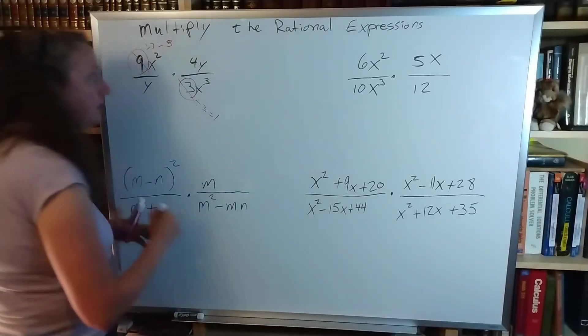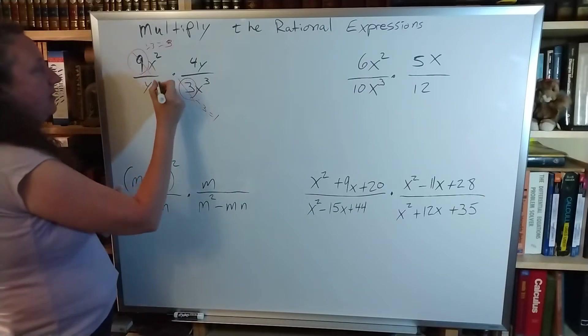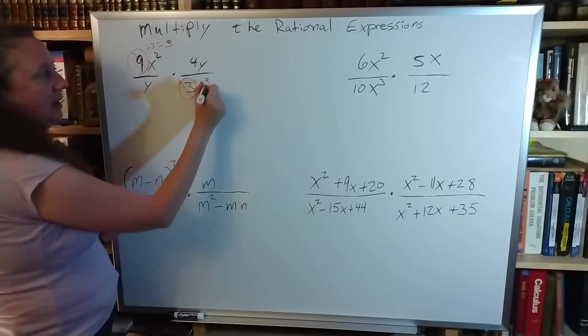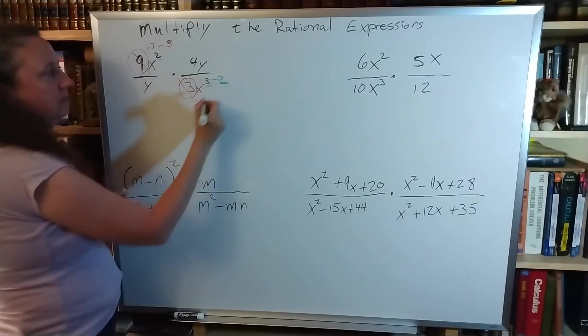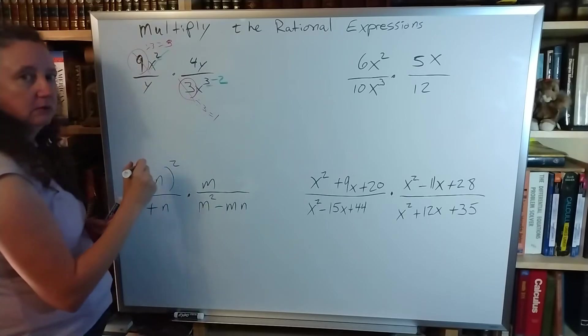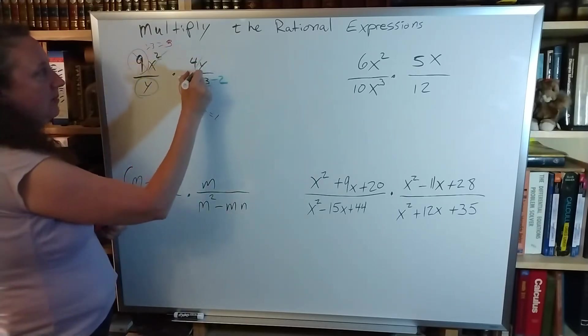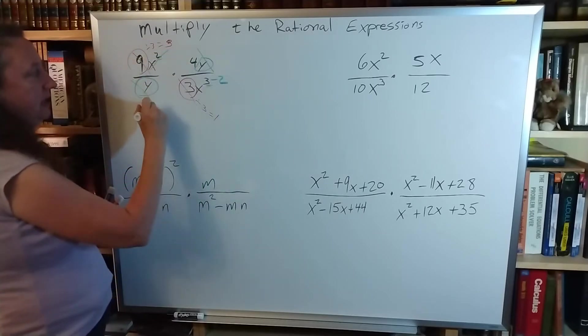Next thing I'm going to do is replace my x's. So I see my 2 up here and I see my 3 down here. I'm going to subtract the 2 from that, and that is now cancelled out. I see my y here, my y there, they cancel out.